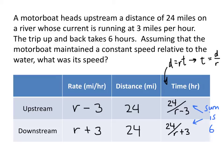So that gives us an equation to solve. And the equation looks something like this: 24 divided by r minus 3, that was the upstream time, plus 24 divided by r plus 3, that was the downstream time, equals 6. So let's solve this equation.